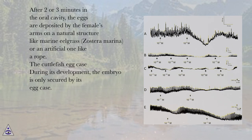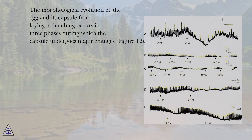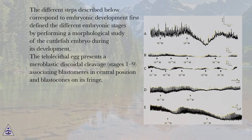The Cuttlefish Egg Case: During its development, the embryo is only secured by its egg case. The morphological evolution of the egg and its capsule from laying to hatching occurs in three phases during which the capsule undergoes major changes, figure 12. The different steps described correspond to embryonic development stages first defined by performing a morphological study of the cuttlefish embryo during its development.